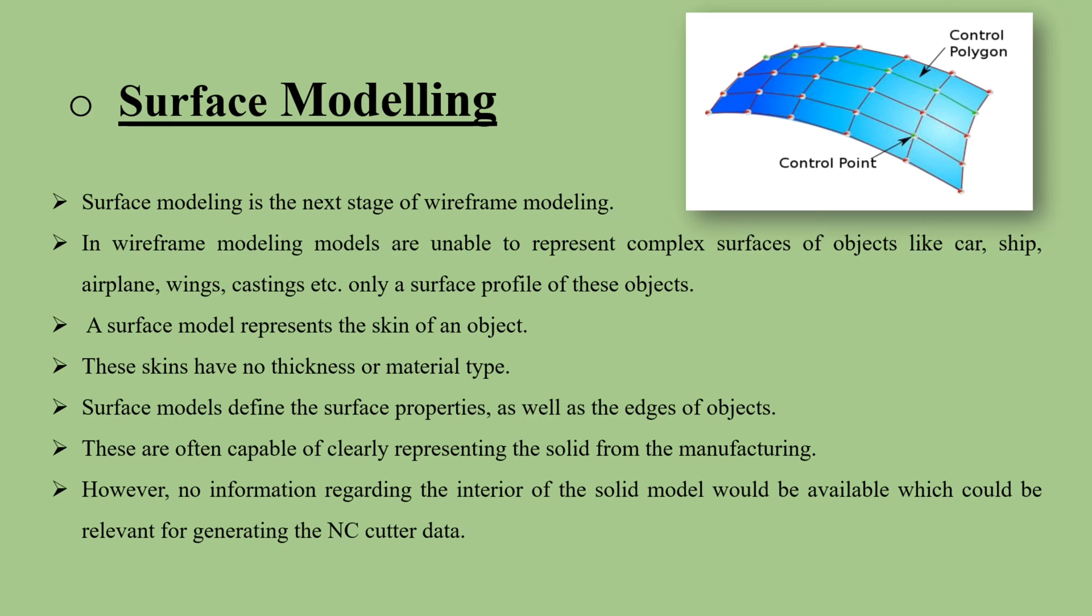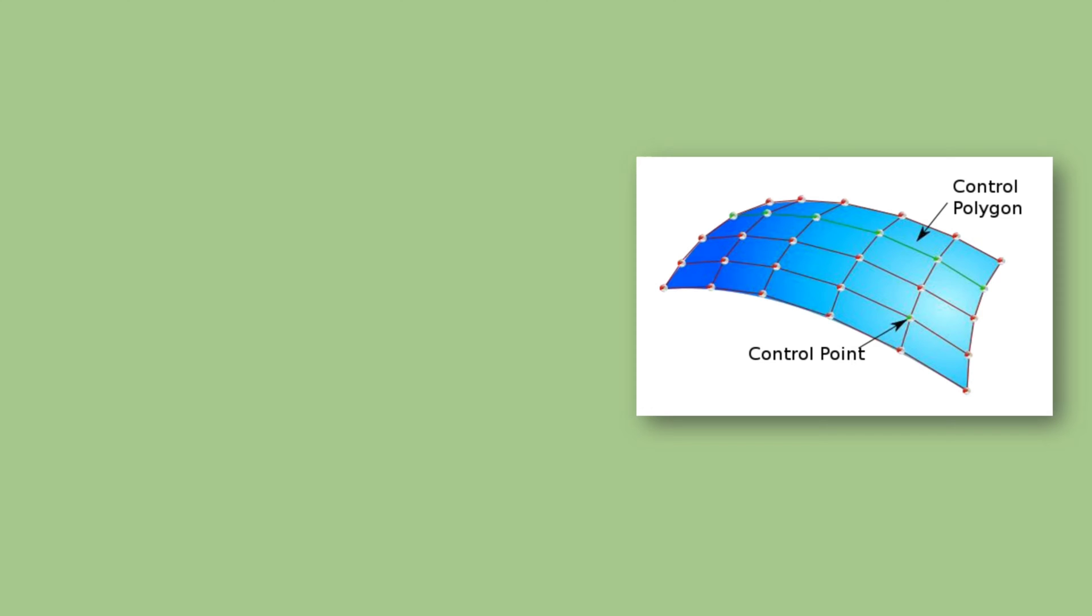However, no information regarding the interior of the solid model would be available, which could be relevant for generating the NC cutter data. Here you can see the example of surface modeling with a control manual and control polygon.